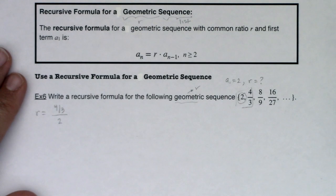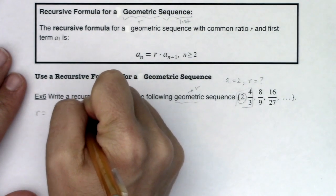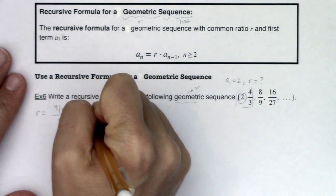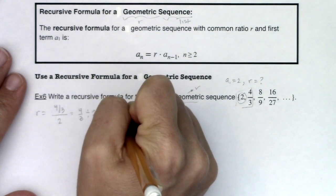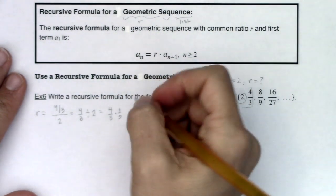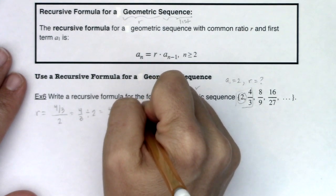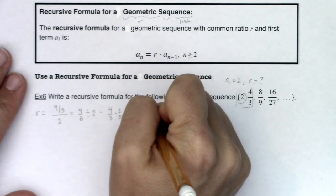So I'm going to do 4 thirds and I'm going to divide it by 2. And just for fun, I'm going to do this without my calculator. This would be 4 thirds divided by 2. That would be like 4 thirds times 1 half, which is ultimately 4 sixths or 2 thirds.